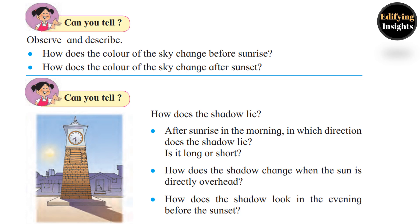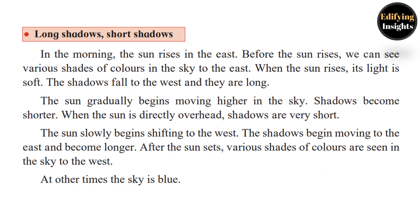How does the shadow look in the evening before sunset? At the time of sunset in the evening, shadows are to the east and they are long. So in the morning there are long shadows, and at noon there are short shadows.